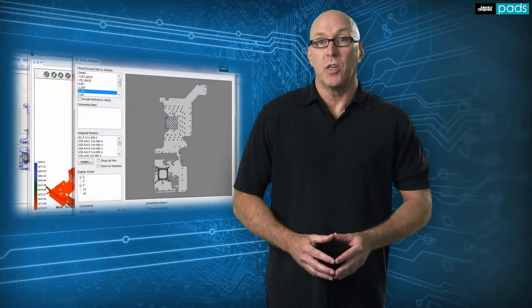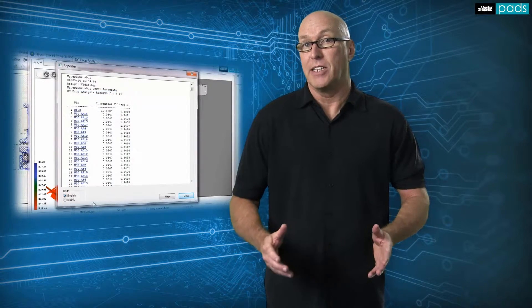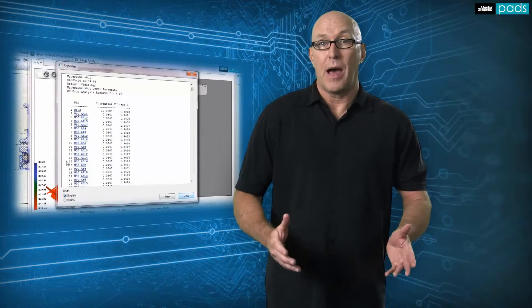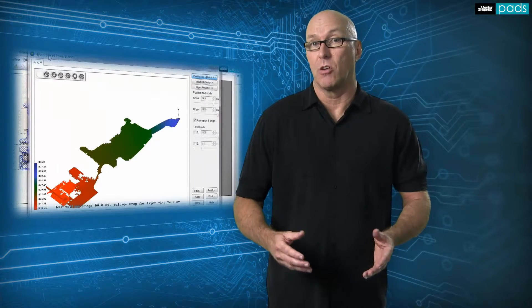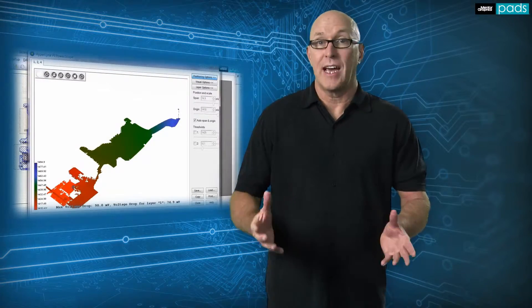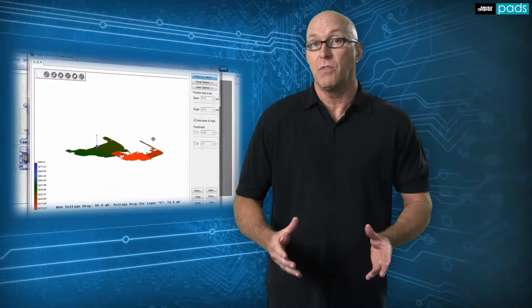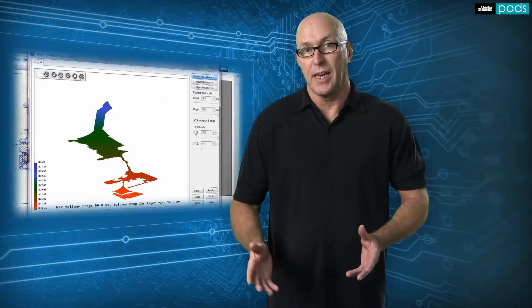Voltage drop issues on a PCB can be easily identified using power integrity analysis. All of the power nets can be examined for voltage drop issues based upon the expected current draws. Determine precisely if certain areas require more stitching vias or more copper to meet your current demands.